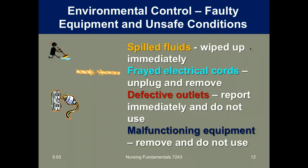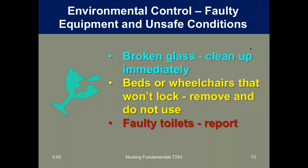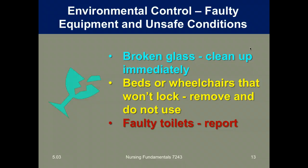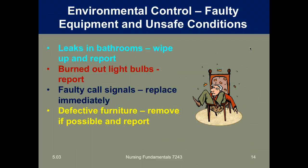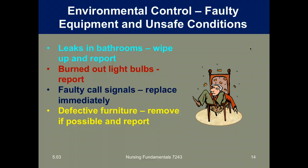For faulty equipment and unsafe conditions: if something spilled, clean it up. Frayed electrical cords should be unplugged and removed; defective outlets should be reported immediately and not used. When equipment malfunctions, remove it, mark it out of service, and don't use it. Broken glass should be cleaned up. Beds or wheelchairs that won't lock should be taken out of service. Faulty toilets, leaks in bathrooms or rooms, water on the floor, burned out light bulbs, and faulty call bells all need to be reported and addressed immediately. Defective furniture should be removed from the room if possible.